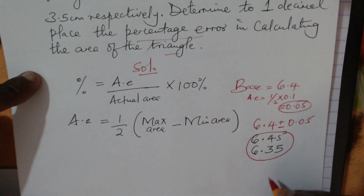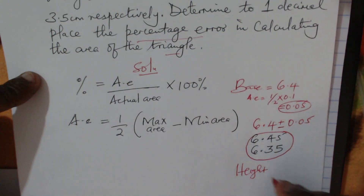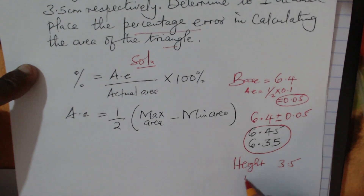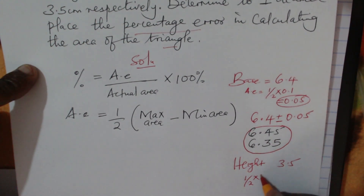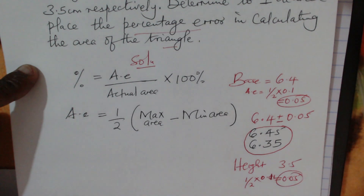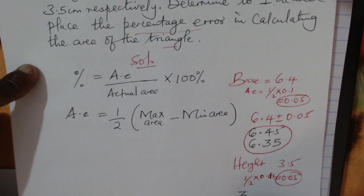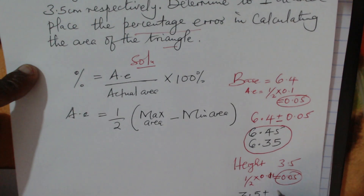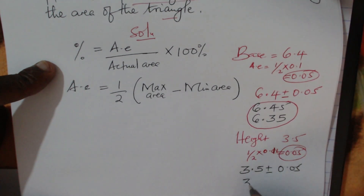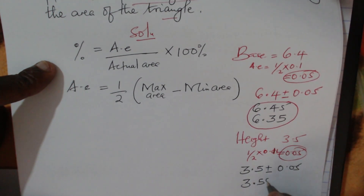What about the height? The height measures 3.5, so the smallest unit of measurement is again 0.1, since it is correct to one decimal place. One half times 0.1 gives 0.05. So the limits for the height are: 3.5 plus or minus 0.05, giving an upper limit of 3.55.